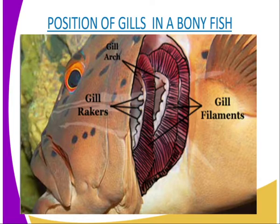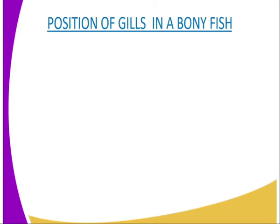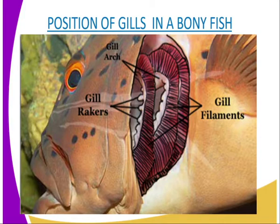The gill filaments trail in water and are covered by a thin epithelium that shortens the distance to be covered by respiratory gases. They are supplied with a dense network of blood capillaries for the transport of respiratory gases. Arising from the other side of the gill bar facing the mouth are the gill rakers — tooth-like structures that are pointed to trap and filter solid particles present in water, preventing them from reaching the delicate filaments and protecting them from mechanical damage.